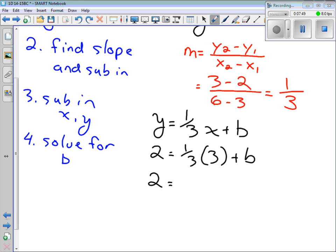So, 1 third times 3 is just going to give me, let's see, 3 over 3, which is just going to be 1. So, 1 plus b, and then I need to subtract 1 from both sides.